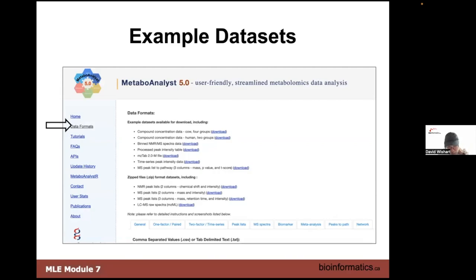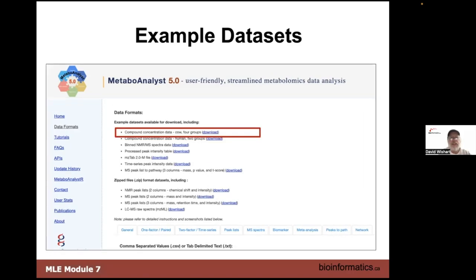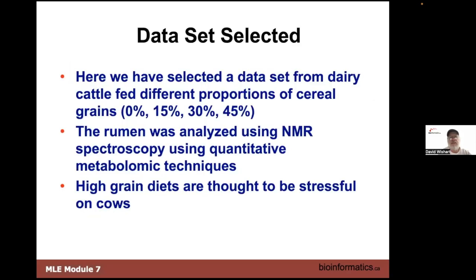MetaboAnalyst has a simple navigation structure: home, data, tutorials, FAQs, APIs, history. You can download and run it locally. It gives examples of datasets, but it just needs a CSV file format. Here's a list of compound concentrations, but it could also be protein concentration data, transcript data, or clinical parameters like height and weight — any label. The examples are largely targeted at the metabolomics community, but it's a hidden gem that more and more people in other omics fields are starting to realize.